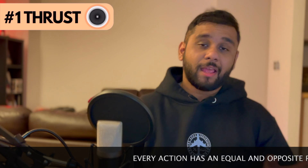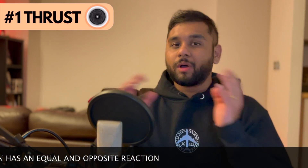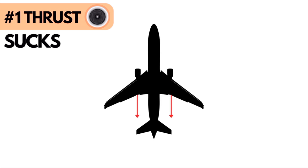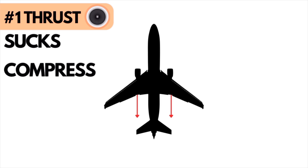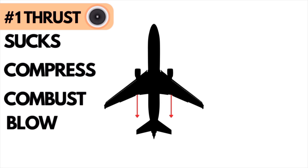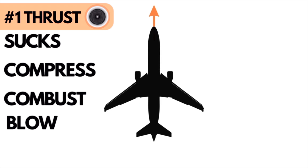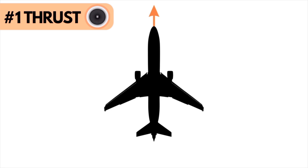So let's start with thrust. Thrust provides the forward motion to the aircraft, and this is done by the engines. The simple physics behind this is Newton's third law of motion — every action has an equal and opposite reaction. The engines suck the air in, compress it, combust it, and send it out at high speed from the exhaust. And this is the reaction force that drives the aircraft forward.